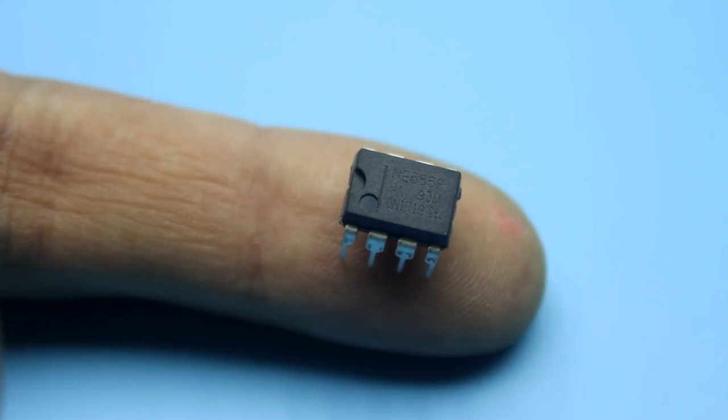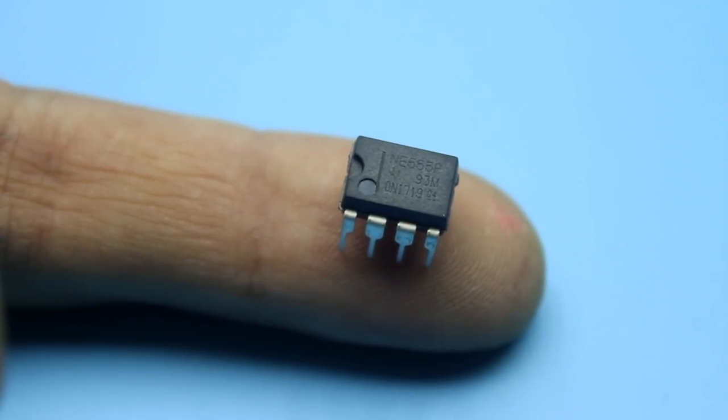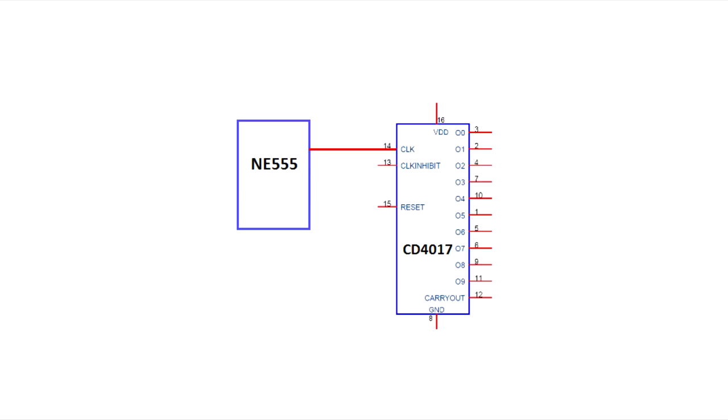Timer NE555, generating a sequence of pulses, periodically sends a high and a low signal level to the input of the counter. The counter simply reads the number of these pulses and switches outputs exactly as many times as the number of pulses arrives at the input.